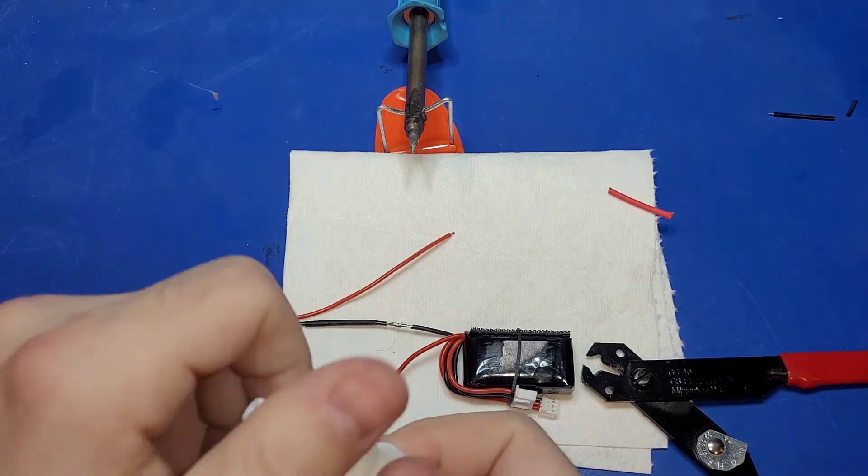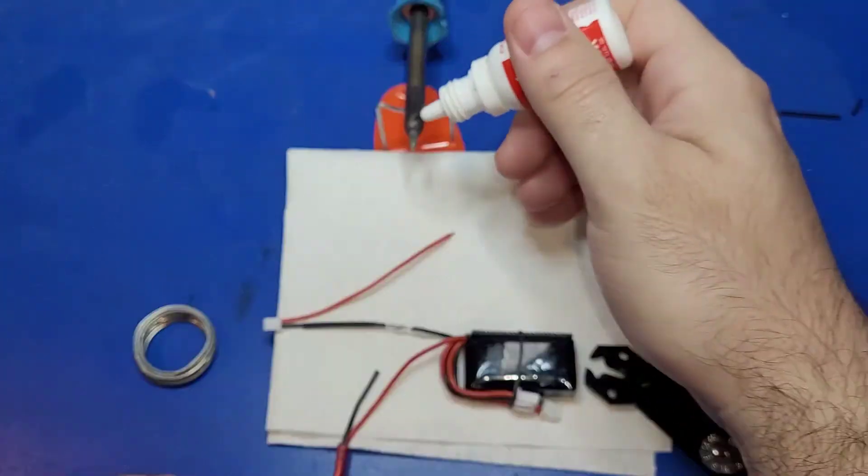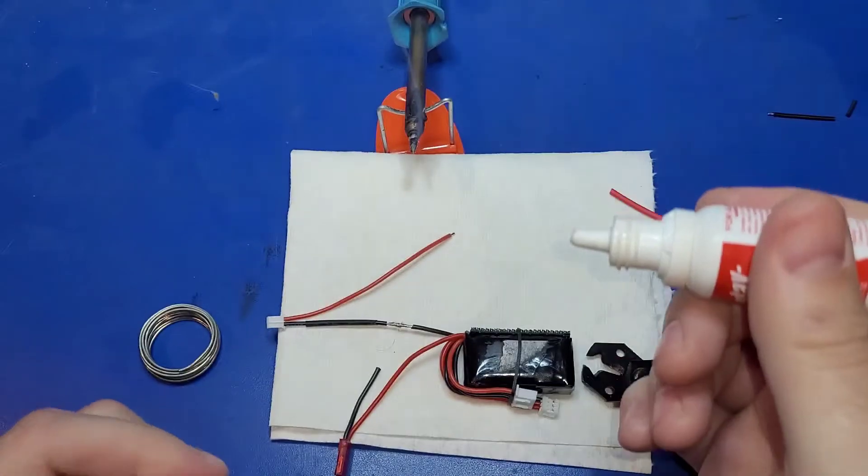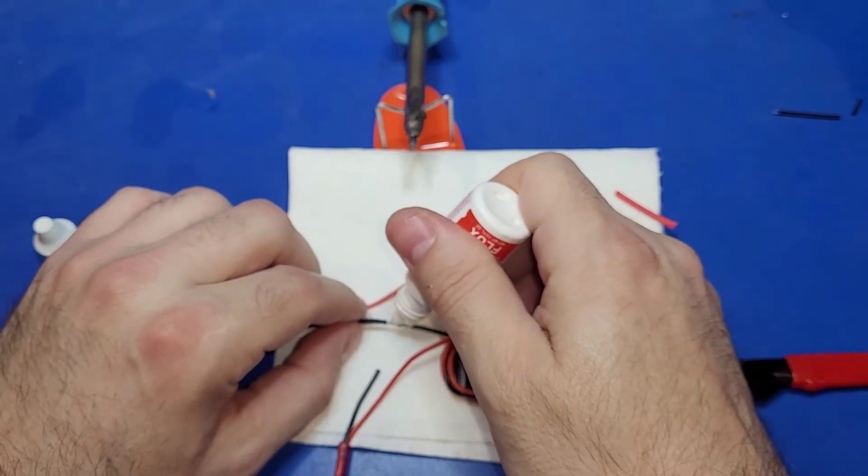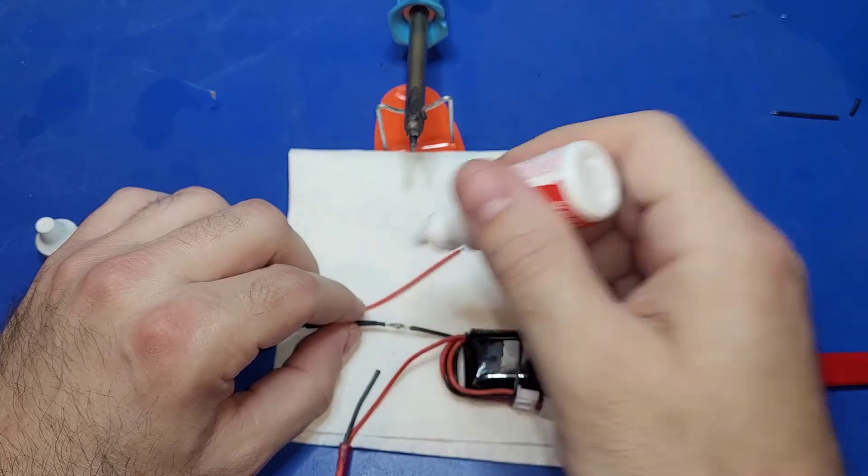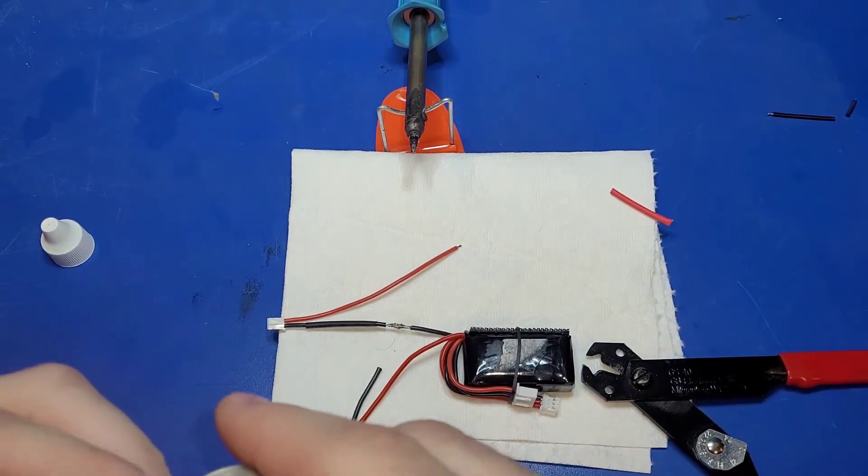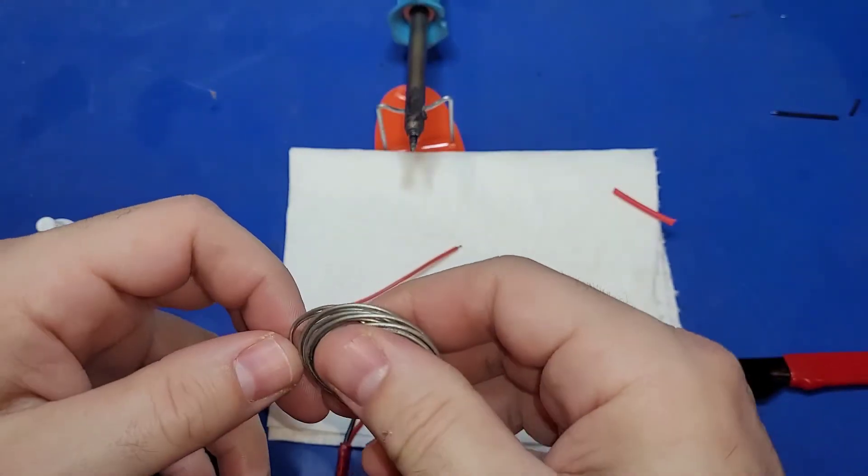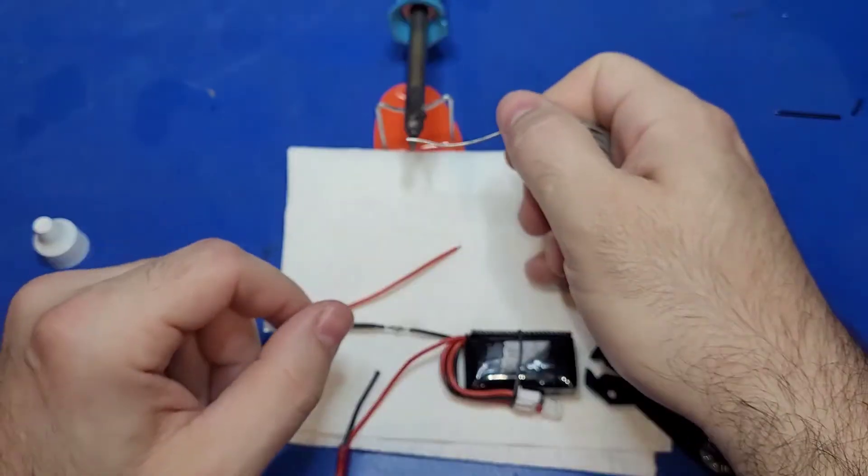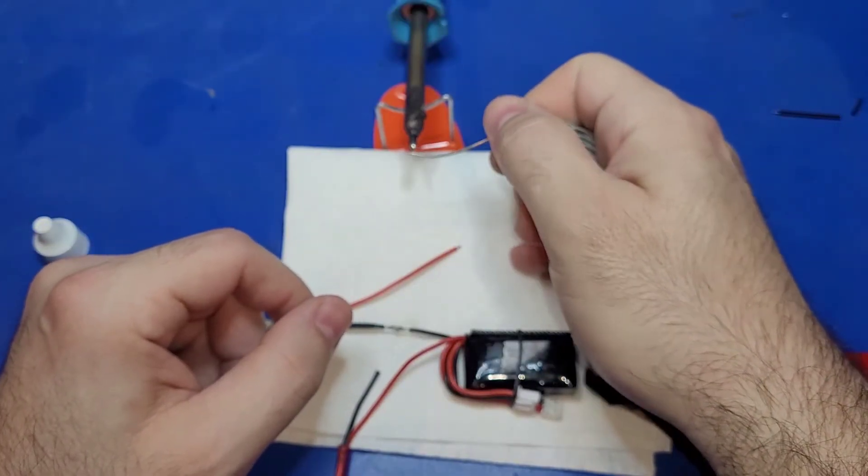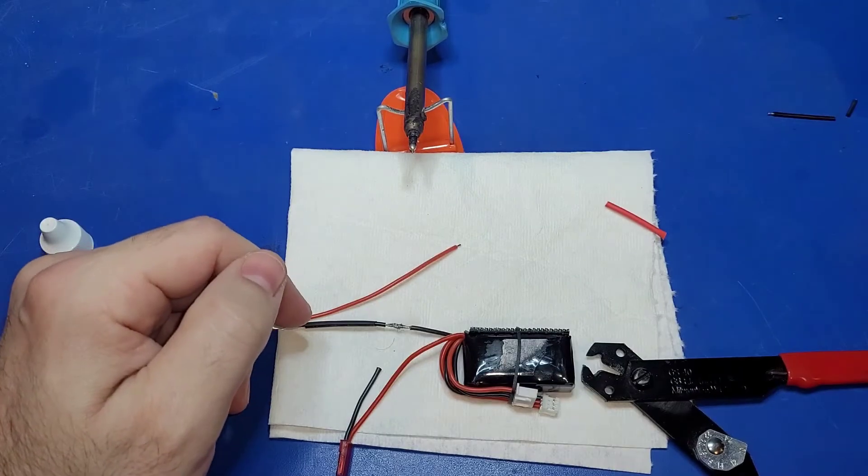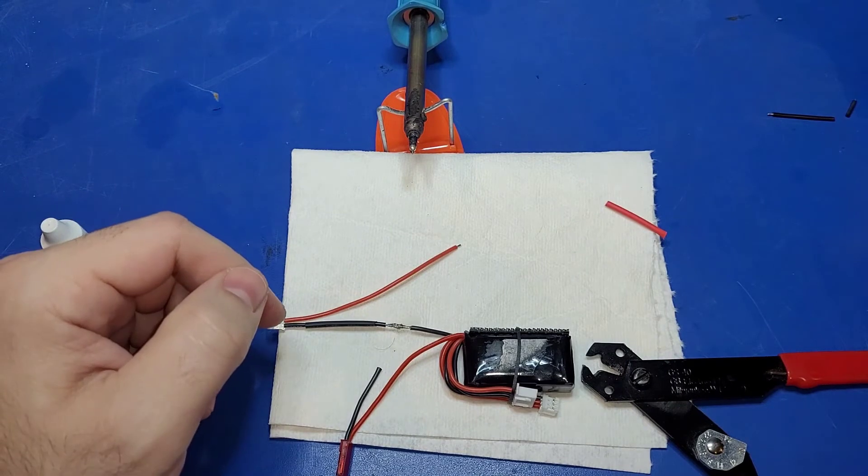So now what I like to do is take some of this liquid flux. Go ahead and put a drop on the soldering iron tip. And then a drop or two on the wire joint. Go ahead and roll some solder out. And just let it melt on there.